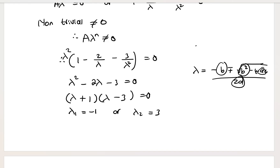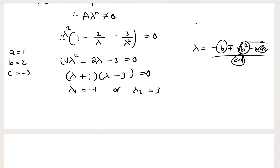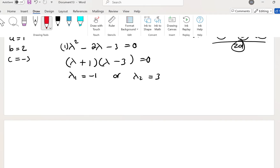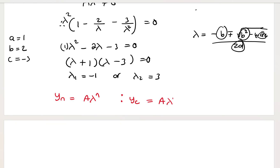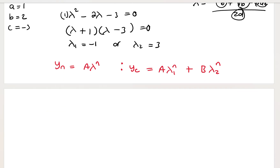If you don't know how to factorize, you can use the quadratic formula: λ equals (−b ± √(b²−4ac)) / 2a, where a, b, and c are coefficients of the characteristic equation. Here a = 1, b = −2, c = −3. Substituting gives both values of λ: negative 1 and 3.